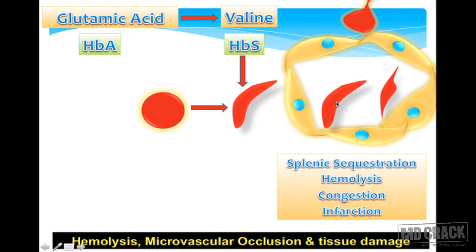Sickled RBCs are not able to pass through splenic sinusoidal spaces, so they come into increasing contact with macrophages within the splenic sinusoids. Surprisingly, sickled RBCs are also known to express more surface adhesion molecules, so they adhere to endothelial cells as well as sinusoidal macrophages. This is how they get sequestered and undergo hemolysis — the splenic macrophages are the ones that destroy them.